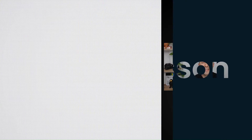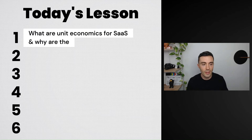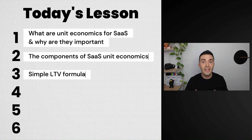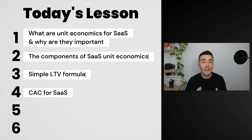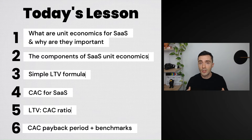Today's lesson is going to be broken down into six different sections. First, we're going to talk about what unit economics are for SaaS and why they're important. Then we'll break down all the different components of unit economics. After that, we'll calculate each piece: customer lifetime value, then CAC (customer acquisition cost), then the LTV to CAC ratio, and finally the CAC payback period — plus benchmarks so you can know what good and bad performance looks like.